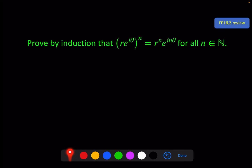Hello and welcome to the third video of the FP2 chapter on complex numbers. There's a starter question on the screen: proof by induction that this expression is equal to this, for all natural numbers.